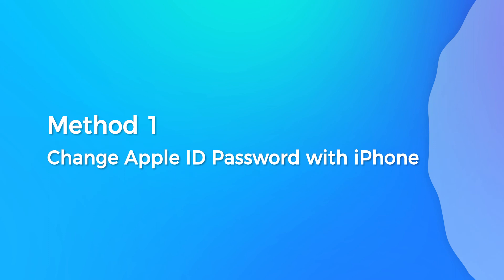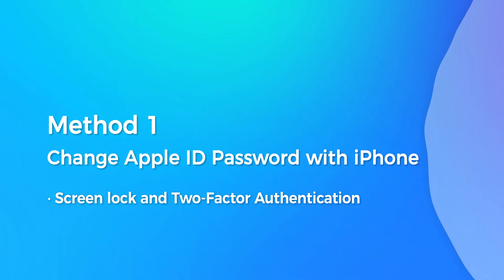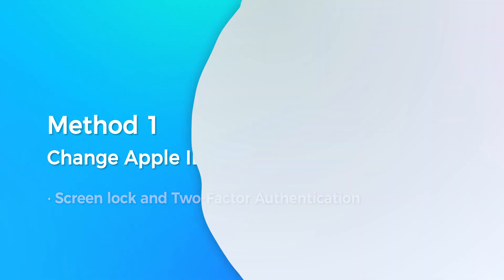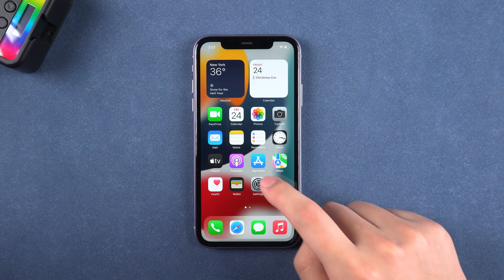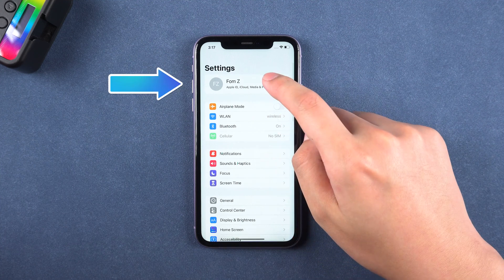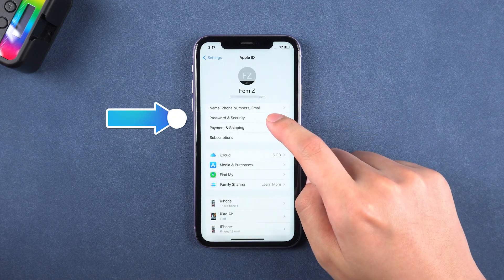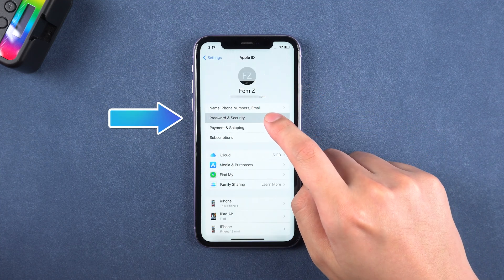Method 1: Change Apple ID password with iPhone. First, you should make sure that you have a screen lock and two-factor authentication is on. Then go to Settings. Tap your Apple ID. Select Password and Security.